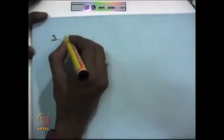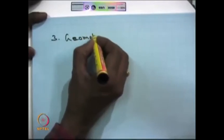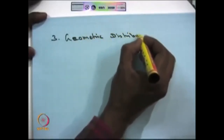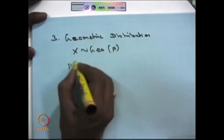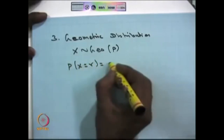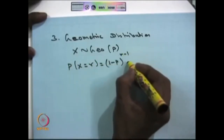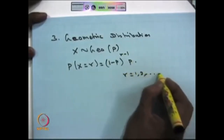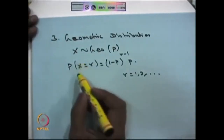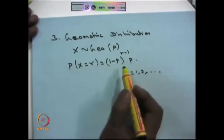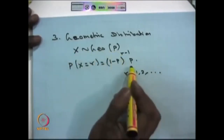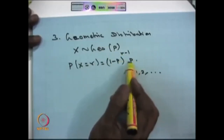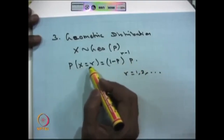The third discrete random variable is the geometric distribution. When we say the random variable X is geometrically distributed with parameter p, the probability mass function is (1-p)^(r-1) times p, where r can take values 1, 2, and so on. Here p is the probability of success in each trial, and this gives the probability that the first success occurs on the r-th trial.